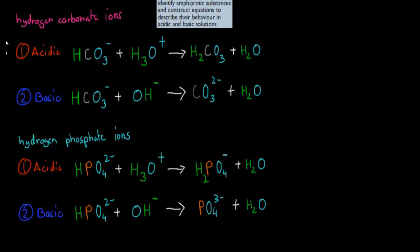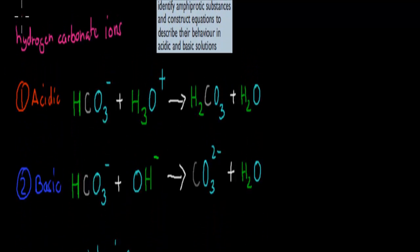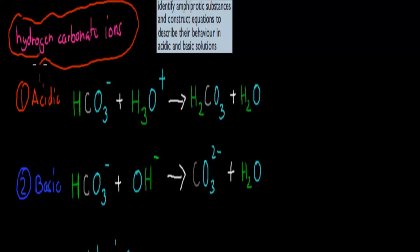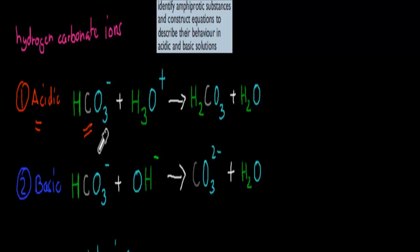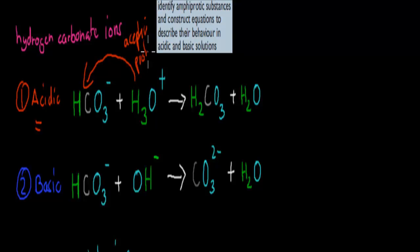The first example I'll talk about is hydrogen carbonate ions — it would be good to remember this because the objective says 'identify.' The hydrogen carbonate ion is HCO3-. In an acidic solution, indicated by the presence of hydronium ions, it is going to accept a proton. If it is accepting a proton, it is acting as a base, and the resulting product is carbonic acid.